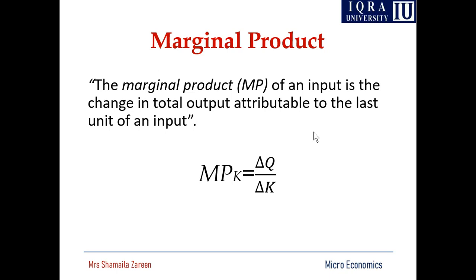When hiring labor, you produce extra output. For example, an organization hiring 10 laborers has a productivity of 50. When they hire the 11th laborer, productivity increases to 54. The marginal productivity of labor is 54 minus 50 equals 4 — meaning the extra laborer gave 4 additional units. These additional laborers are increasing efficiency.